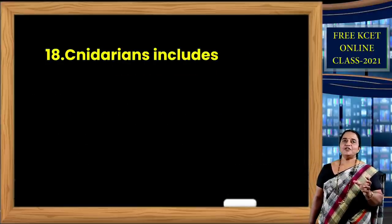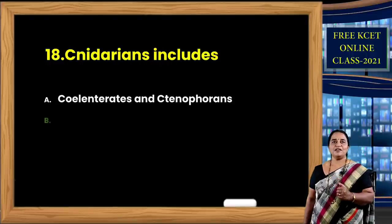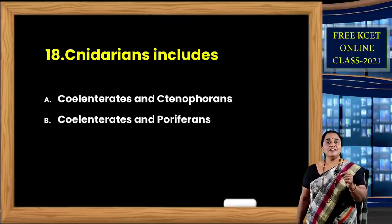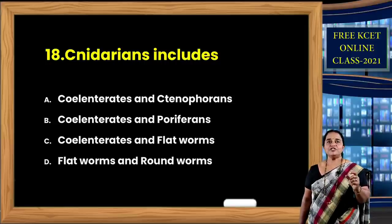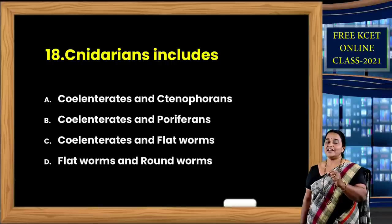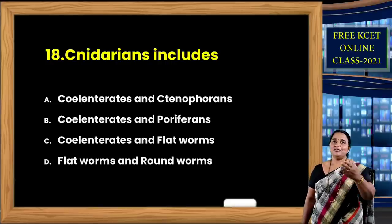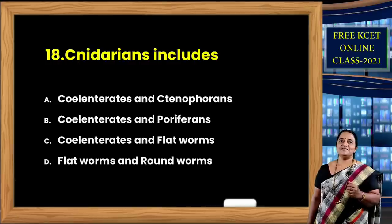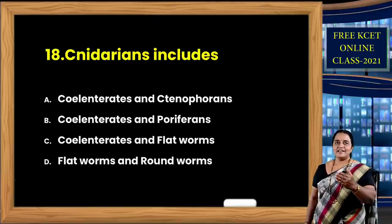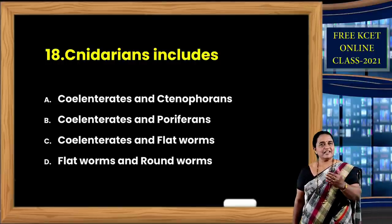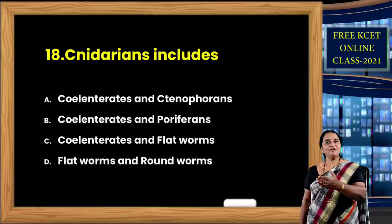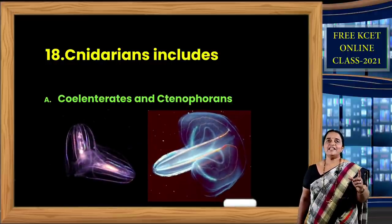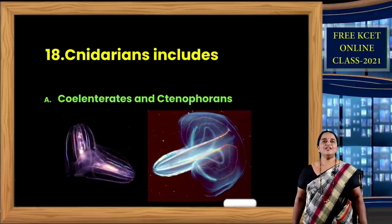Question 18: Cnidarians include coelenterata and ctenophora. Animals are called cnidarians because they have special stinging cells called cnidoblasts containing nematocytes. So the correct option is A — coelenterates and ctenophorans. Question 19: Ascaris is characterized by — options: absence of true coelom but presence of metamerism; presence of neither true coelom nor metamerism; presence of true coelom but absence of metamerism; presence of true coelom and metamerism.